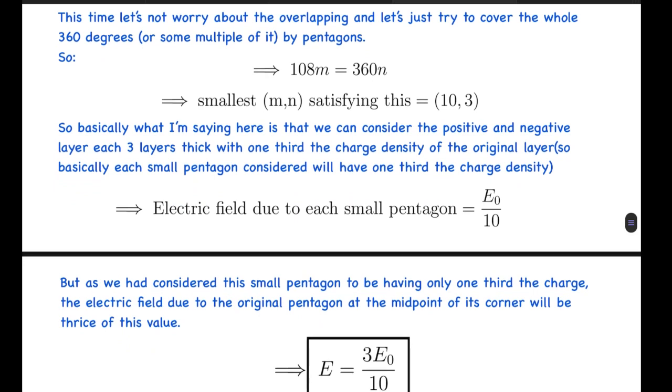this time let's not worry about the overlapping and let's just try to cover the whole 360 degrees or some multiple of it by pentagons. So basically, what I've said here is that some multiple of 108 equals some other multiple of 360 degrees. The smallest (m,n) pair satisfying this condition is (10,3). You can see this yourself. So basically,